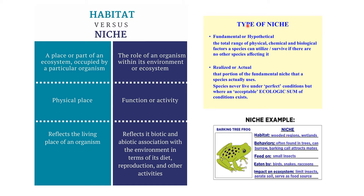Niche is of two types: fundamental or hypothetical, which means the organism does not have any competitor — this is actually not possible. The second is realistic or actual: the portion of the fundamental niche that the species actually uses. Species never live under perfect conditions, but where an acceptable ecological set of conditions exists, they have the ability to adapt to the surroundings and live.